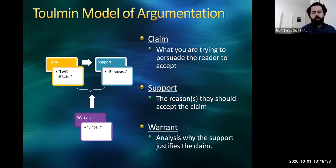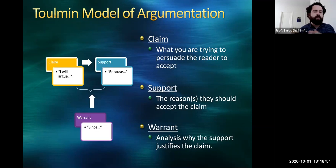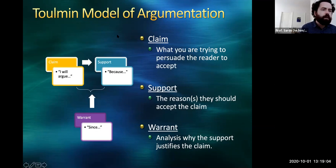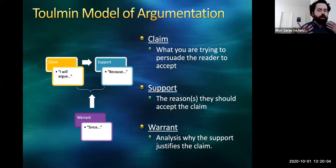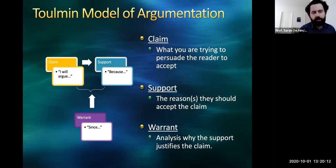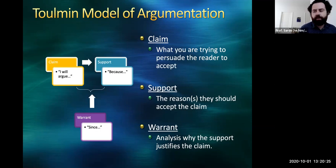And then finally, the warrant. The warrant is the analysis that explains why the evidence you've provided means I should accept that the claim is true. For example, you could say 'I will argue in favor of Medicare for All because the Earth is the third planet from the sun.' That supporting reason is factually true, but it doesn't provide reasons in support of accepting the claim. So the warrant is ultimately the logical connective tissue that links the evidence you're providing to reasons we should accept the claim.